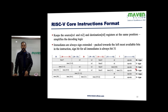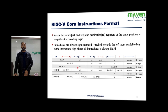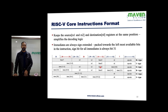S-type means store type. We use this instruction primarily to write values into memory. The value to be stored is in RS2, and the address is calculated from both RS1 and the immediate value — the address is the sum of RS1 and the immediate. Again, we need to sign extend the immediate to 32 bits and then add it to RS1. Funct3 defines the type of store operation, such as storing a word or a half-word.